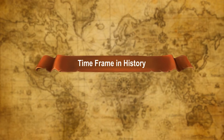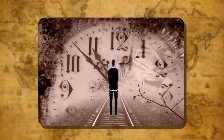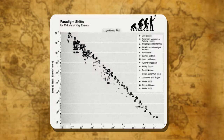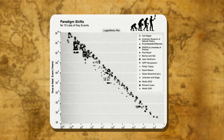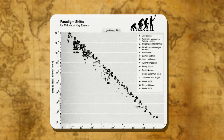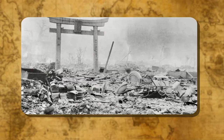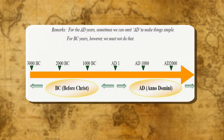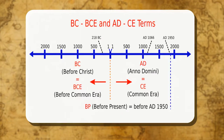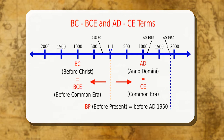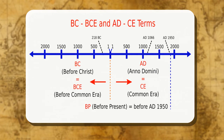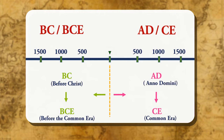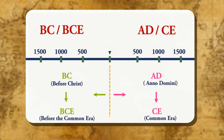In history, knowledge of the dates of past events gives an idea of their correct sequence. By this, we can learn about the progress of events more clearly. In history, we find dates with the letters BC or AD written after them. The full form of BC is Before Christ. The full form of AD is Anno Domini.